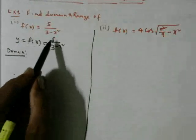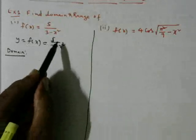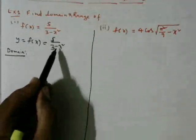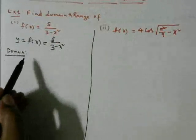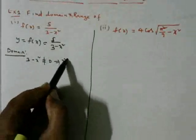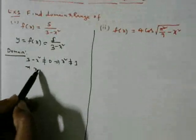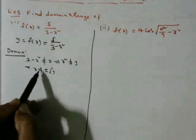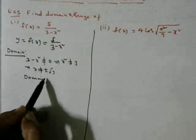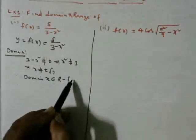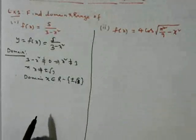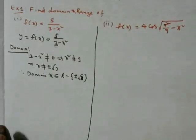For domain, there were four rules discussed in the last video. Here we apply the first rule: y is undefined if the denominator is 0. Therefore, 3 - x² ≠ 0, which gives x² ≠ 3, so x cannot equal ±√3. Therefore, the domain is all real numbers except √3 and -√3.